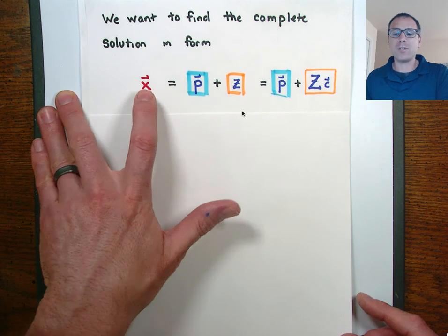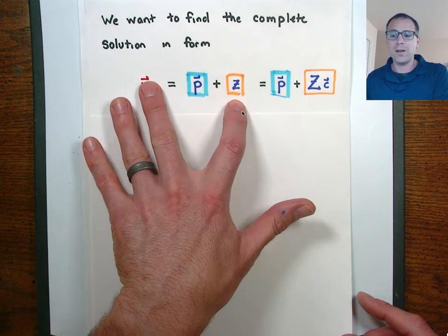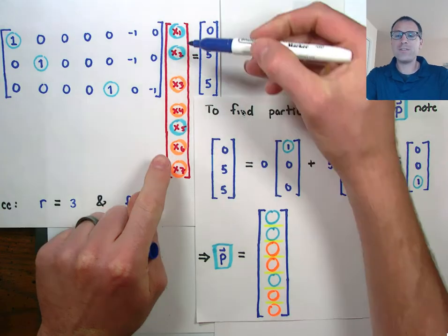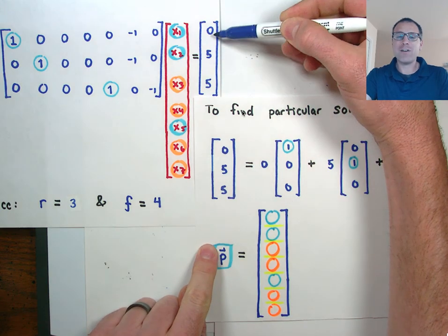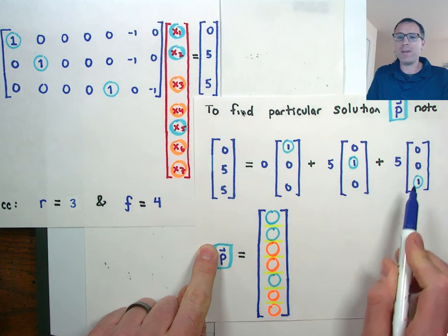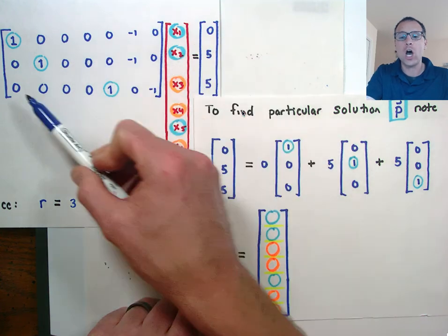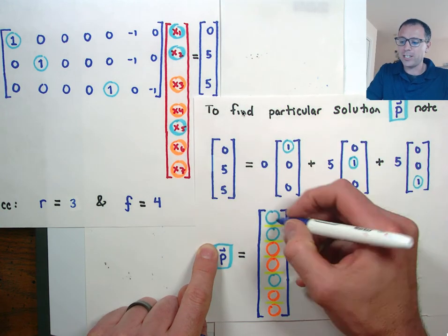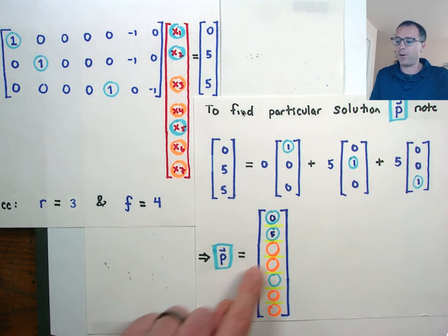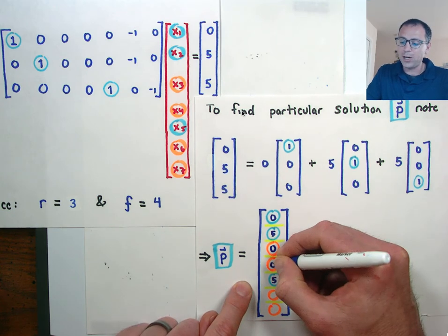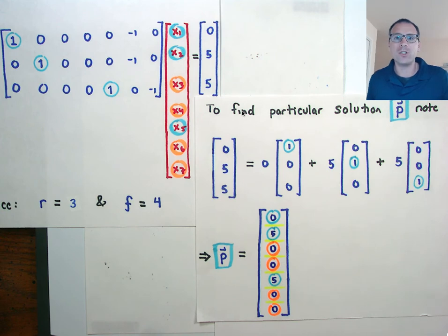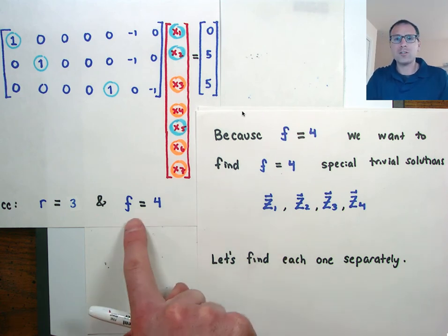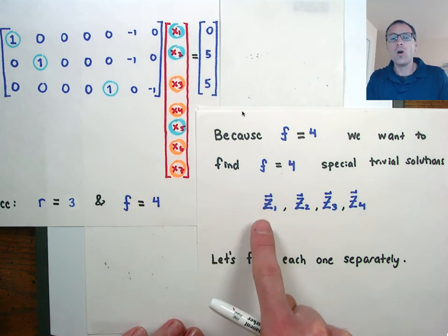When solving for a complete solution, every complete solution is going to be a particular solution plus a trivial solution. That trivial solution is written as a linear combination of the special trivial solutions. Now that we've identified the pivot and free variables, notice that the right-hand side vector Y can be written as a unique linear combination of the pivot variables — as if solving a non-singular linear systems problem. The solution is zero times the first pivot variable, five times the second, and five times the third. Using zero information from the free variables, we have our particular solution.